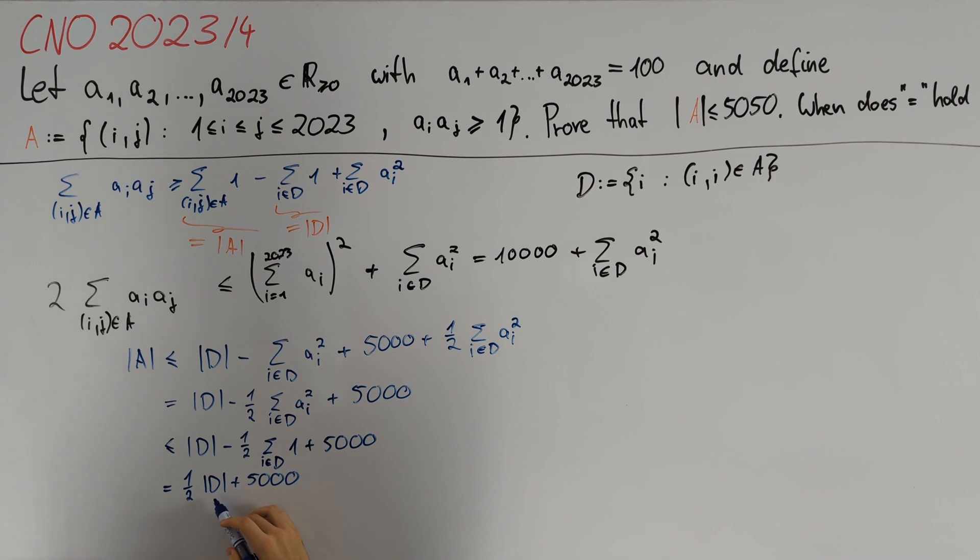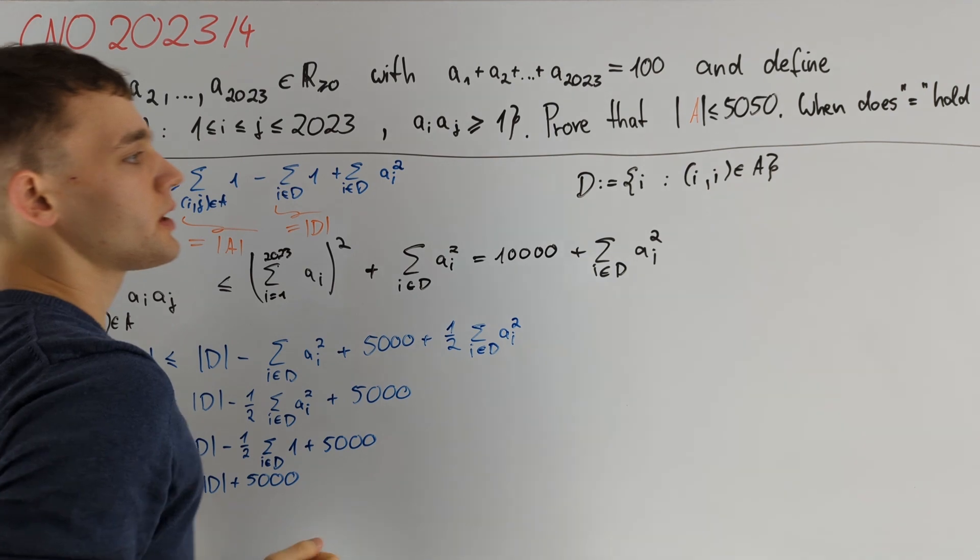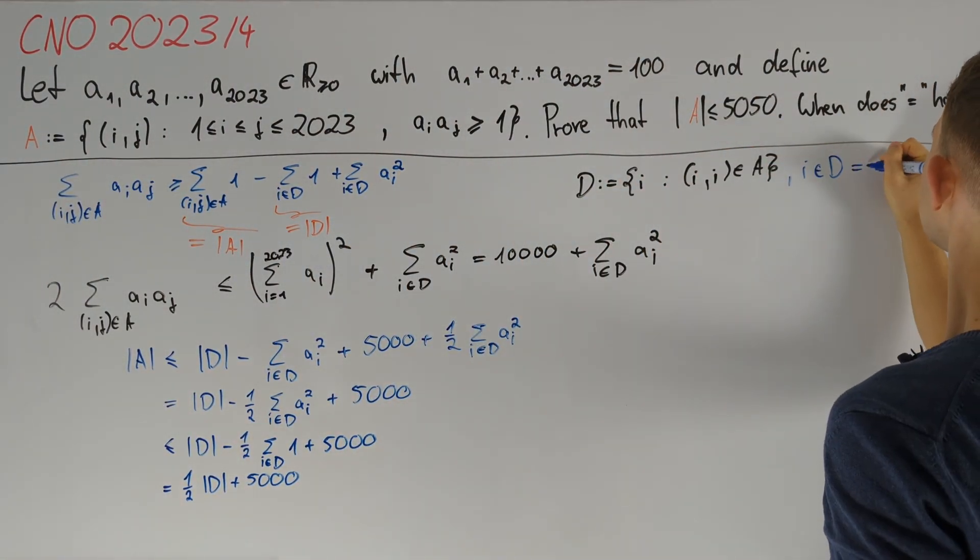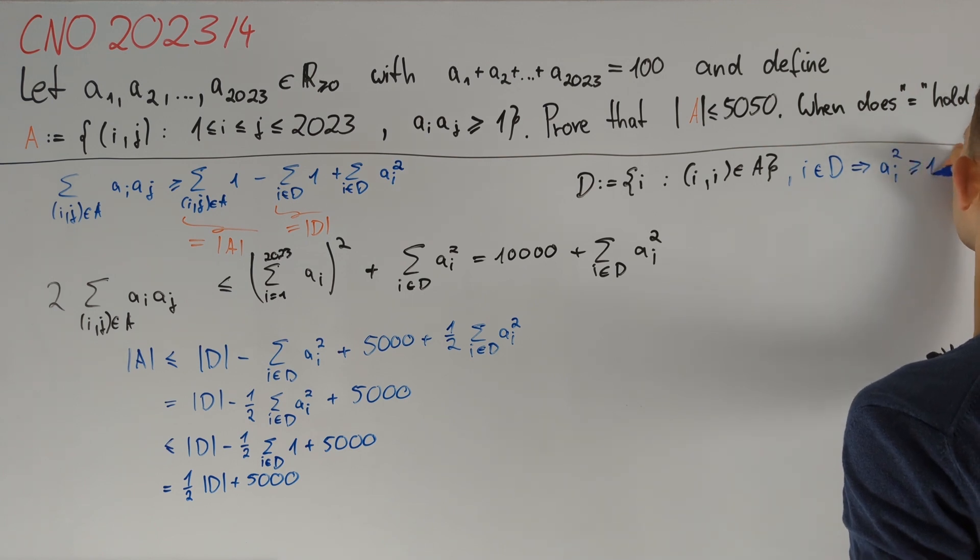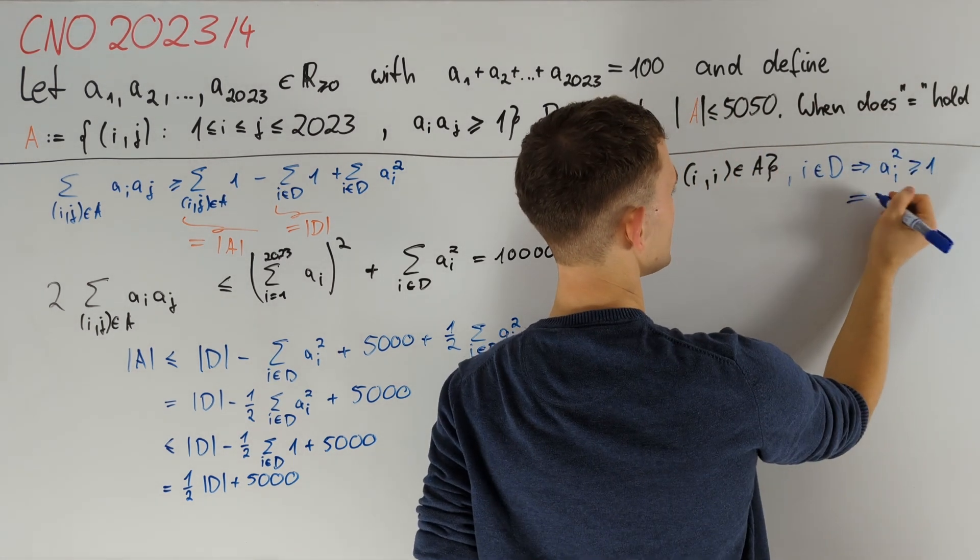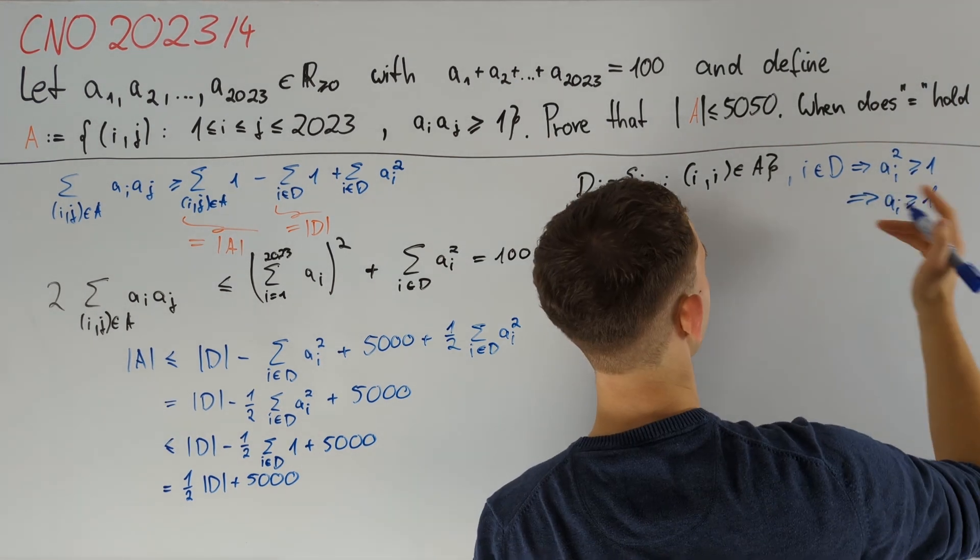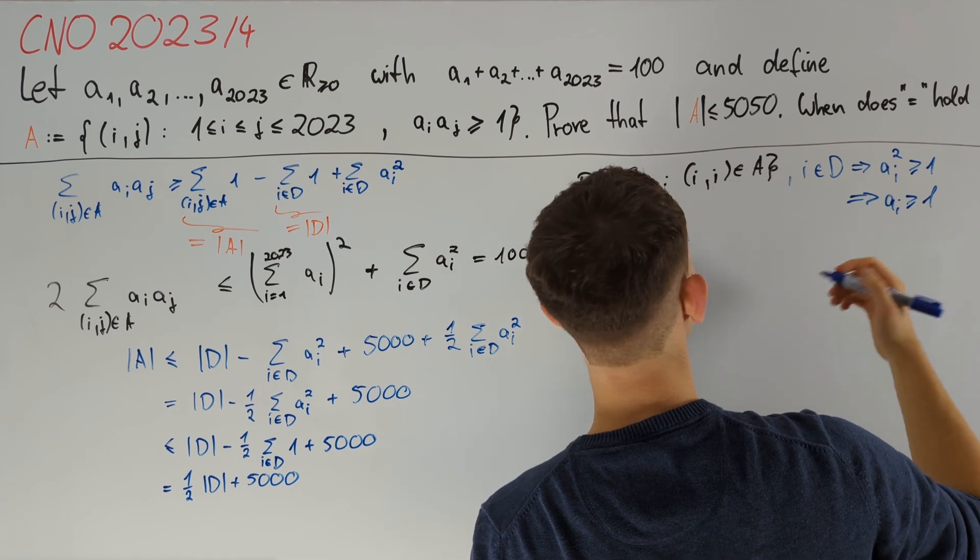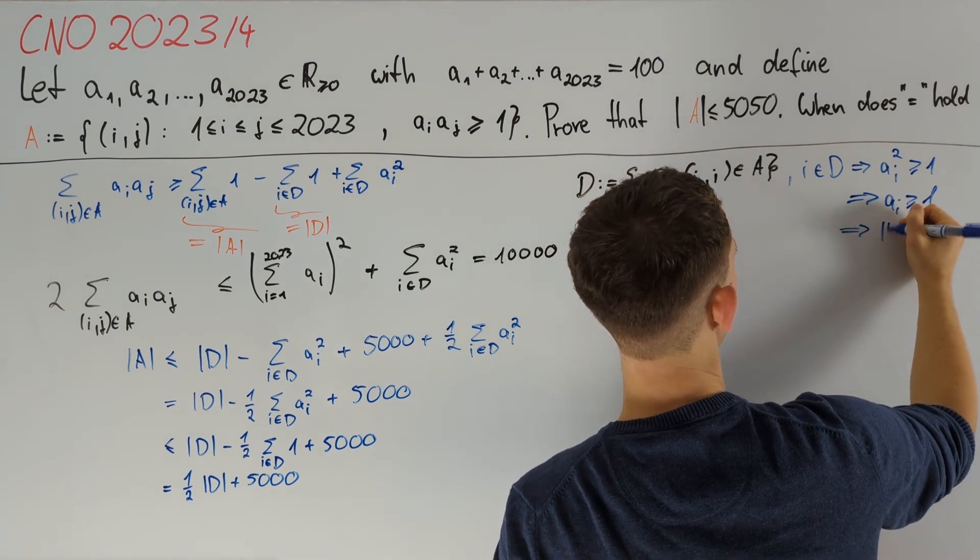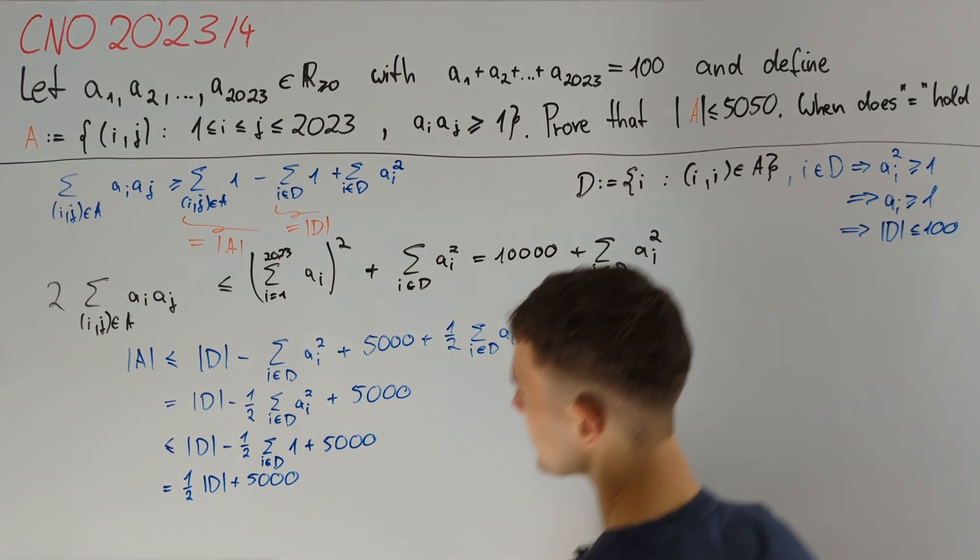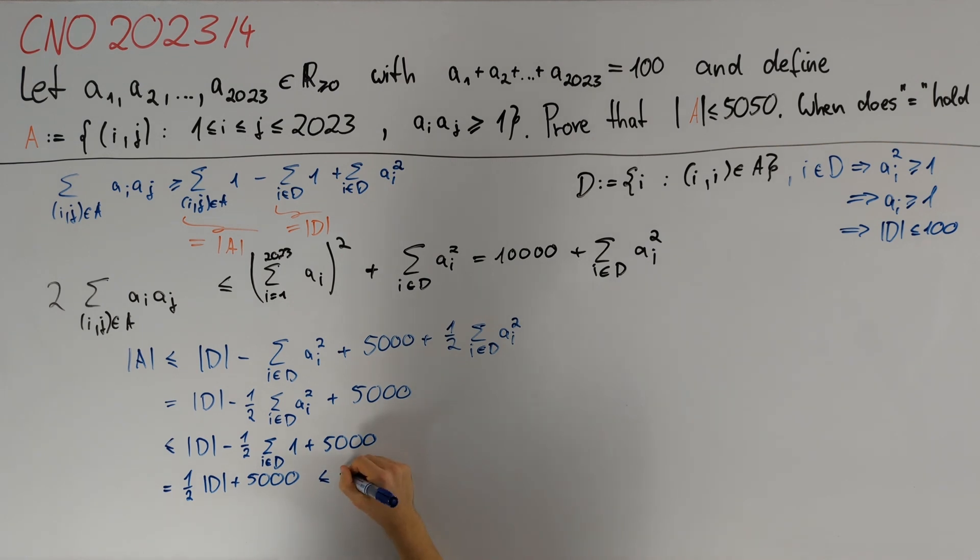It is left to show that the cardinality of d is less than or equal to 100. Taking a look at the definition of d, we note that i in d tells us that a_i squared is greater than or equal to 1, and from this we can conclude that a_i must be greater than or equal to 1. Since the sum of all of our a_i is equal to 100, this gives us cardinality of d less than or equal to 100, which is what we wanted since we now obtain that all of this is less than or equal to 5050.